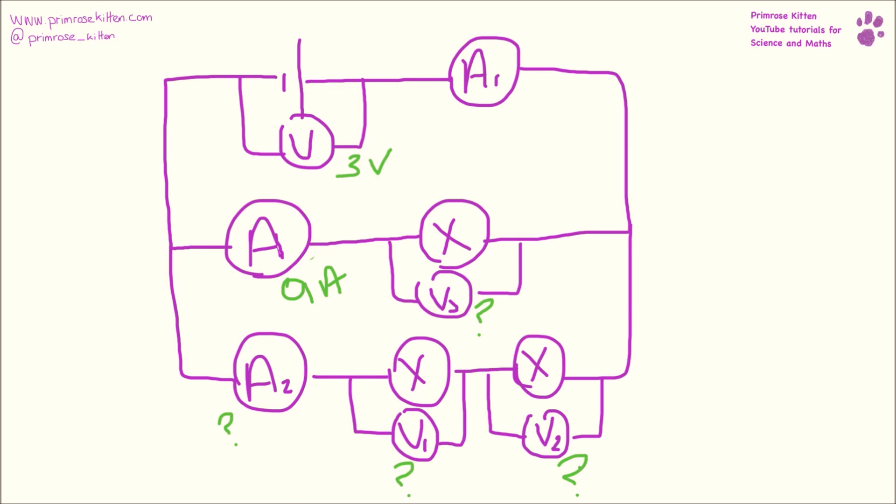Slightly more complicated one now. There are several to work out. So if we look at the voltage first of all, each one needs to be 3 volts because they all need to be the same. So this one here needs to be the same, and these two down here need to add up to be 3 volts, which makes that 1.5 volts and that one 1.5 volts.